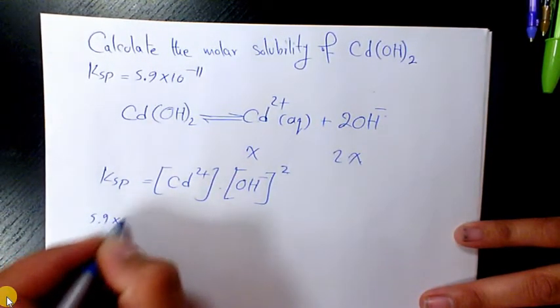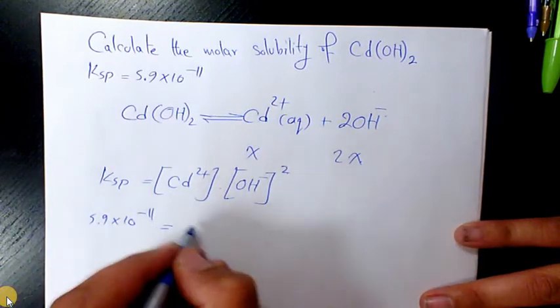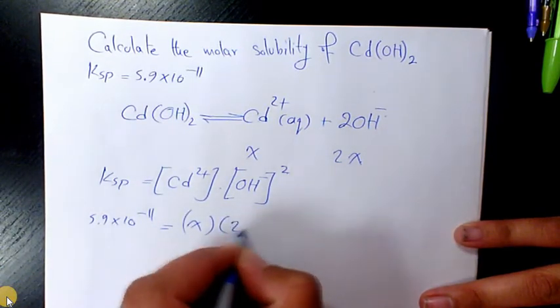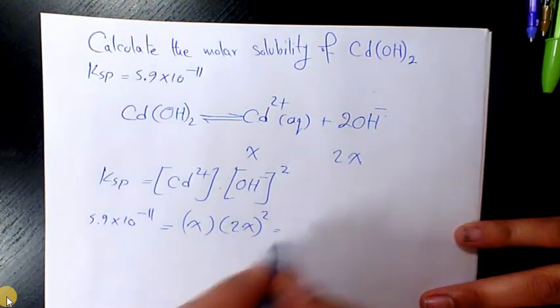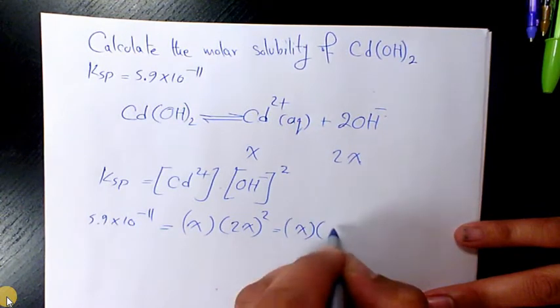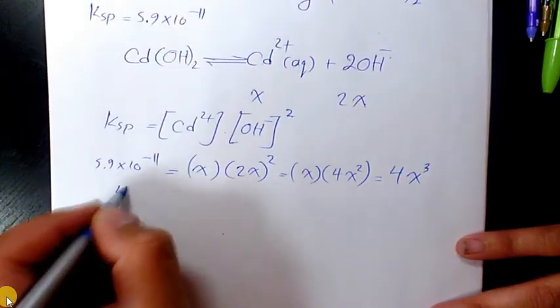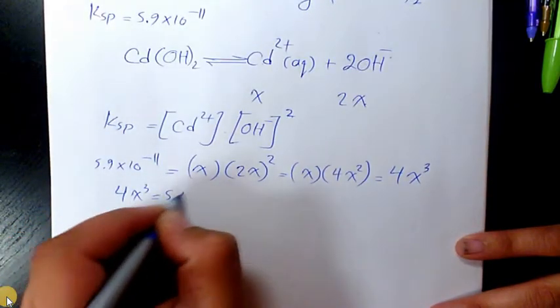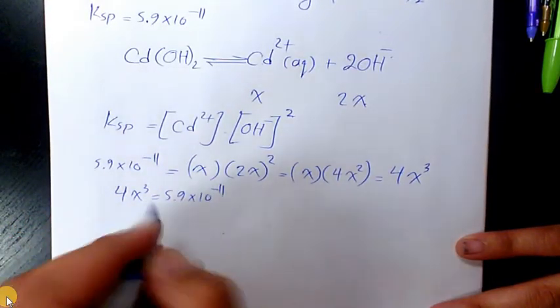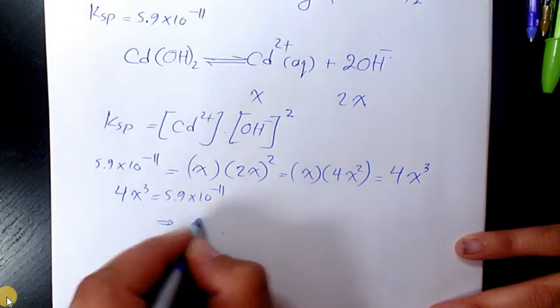Which will be 5.9 times 10 to the power of negative 11 equals X times 2X to the power of 2, which is going to be X times 4X square, which is going to be 4X cube. So 4X cube equals to 5.9 times 10 to the power of negative 11. Then we can say X equals to 1.1 times 10 to the power of negative 5 mole per liter.